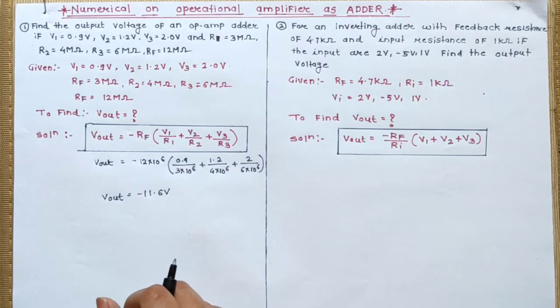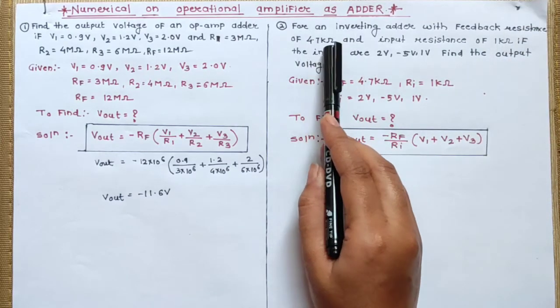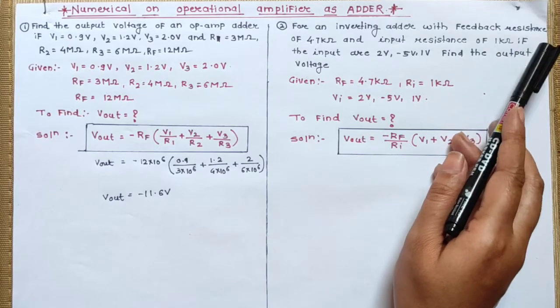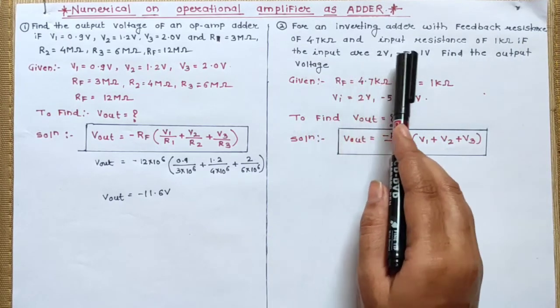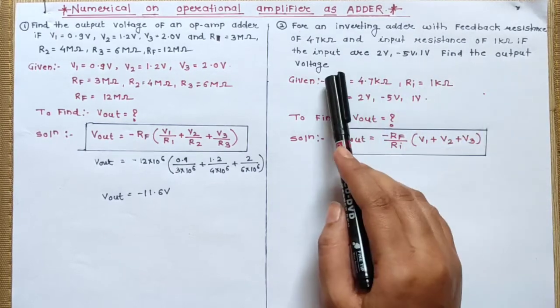Now come to the numerical number two. For an inverting adder with a feedback resistance of 4.7 kilo ohm and the input resistance of 1 kilo ohm, if the inputs are 2 volt minus 5 volt 1 volt, find the output voltage.